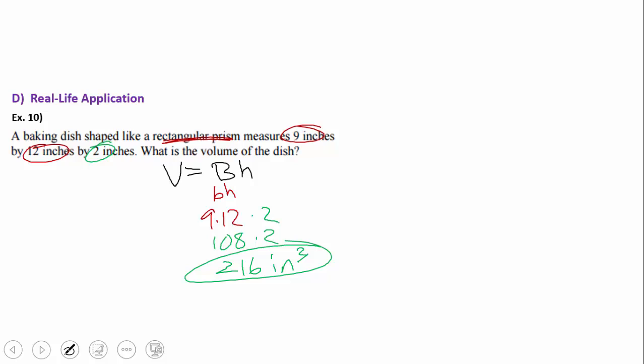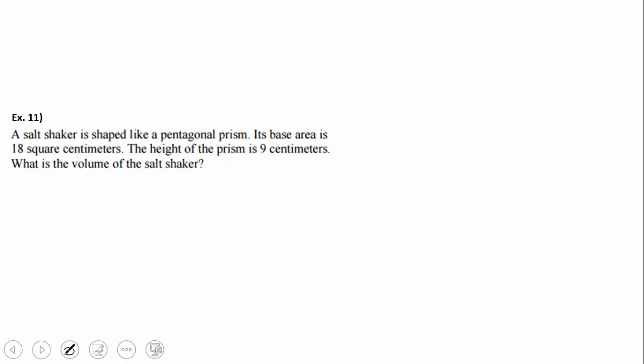Inches cubed. Wow. I finally made that slip going from surface area to volume. 216 inches cubed of cooking space, of food space inside this baking dish. Right? Very good. Very good. Moving right along.